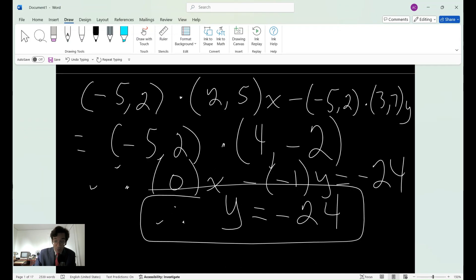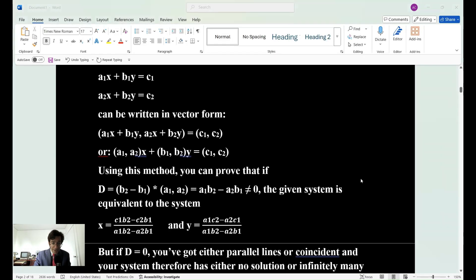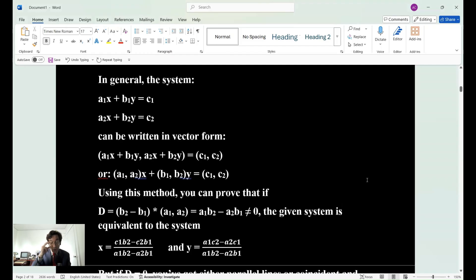So in general we could say that a system can be written as follows. We're going to talk about the determinant now because we didn't really talk about it yesterday, but I figured it is actually very relevant to talk about the determinant here. So in general the system that we just saw, it can be written in vector form. This is the formal way of putting it. And you can use this method to prove that the determinant, that if the determinant does not equal zero, then you have the given system.